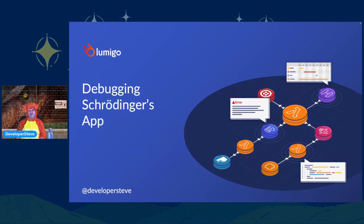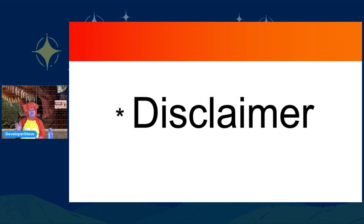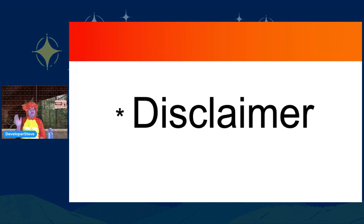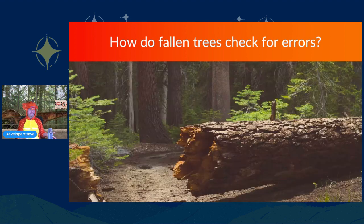I am on the Discord, so please drop any messages you want there as well. I do have a disclaimer before we start — it's got an asterisk, which makes it twice as bad, right? No. This disclaimer is fine. I have a lot of tech jokes. I've been a developer advocate for many years and collected these in my adventures and travels. This is open source, so please take it with you. I love doing these at the start of my talk because it makes everyone smile. So, how do fallen trees check for errors? They use log files!